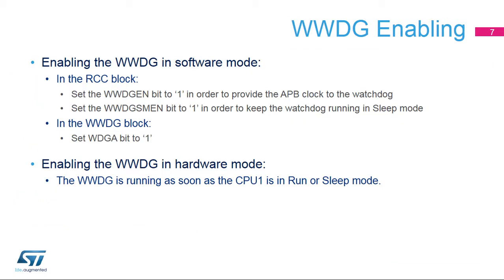The WWDG can work either in hardware or software mode. In software mode, the application needs to enable the APB1 watchdog clocks via the RCC and set the bit WDGA to 1 in the WWDG in order to enable the watchdog. Note that once the APB1 clock for the watchdog is enabled, the application cannot disable it — only a system reset can disable the watchdog clock. The low-power enable bit can be set as well if the application wishes to keep the window watchdog activated even if CPU1 is in sleep mode.